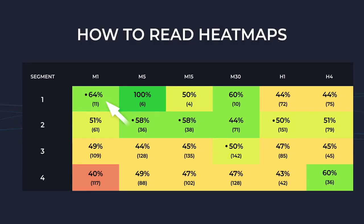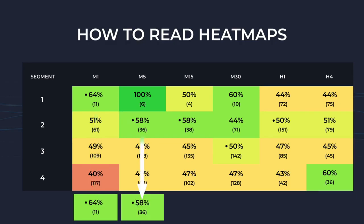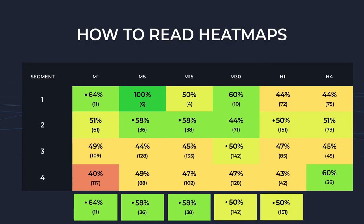Here is how to read heat maps: the percentage shows successfully completed signals, along with the number of signals. The dot shows which segment the current indicator value is located in. When the RSI indicator on the 1-minute chart was in segment one, the percentage of winning signals was 64%. On the 5-minute chart in segment two, it was 58%. On the 15-minute chart in segment two, it was also 58%. For the RSI indicator on the H4 chart, there is no data.